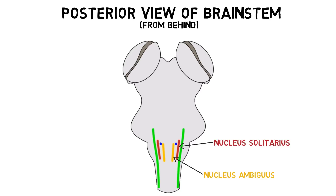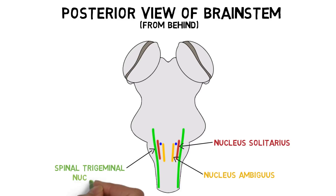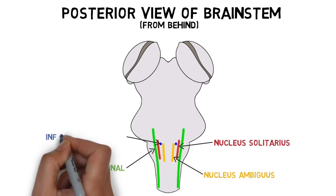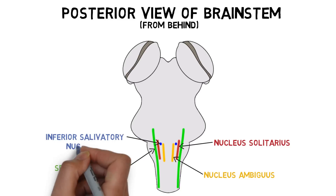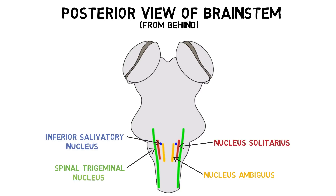The fibers that convey touch and pain synapse in the spinal trigeminal nucleus. The fibers that innervate the parotid gland arise from the inferior salivatory nucleus.